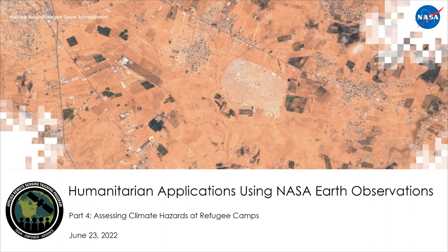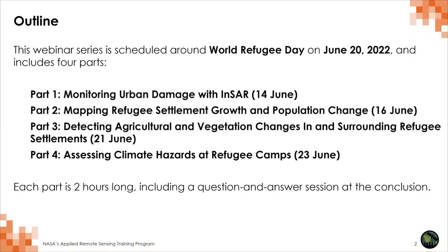Welcome everybody to part four of our Humanitarian Applications using NASA Earth Observations ARSET webinar. Today we are talking about assessing climate hazards at refugee camps. And as you recall from the previous parts, we've gone over the arc of different kinds of humanitarian applications in the context of armed conflict and displacement.